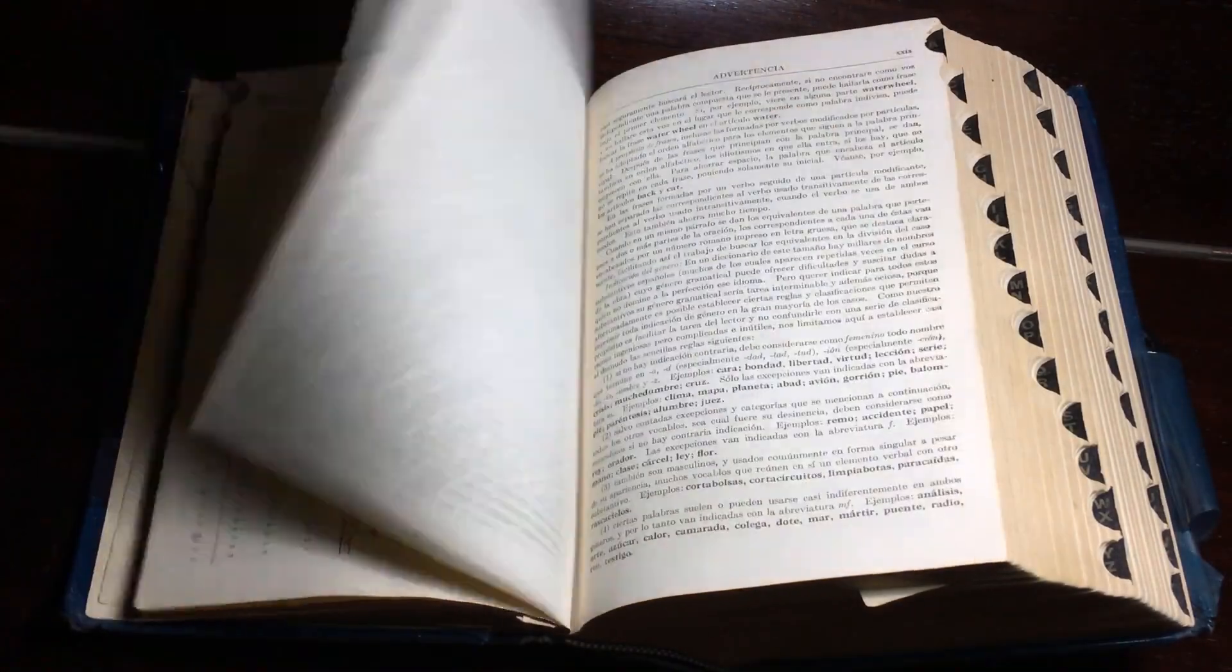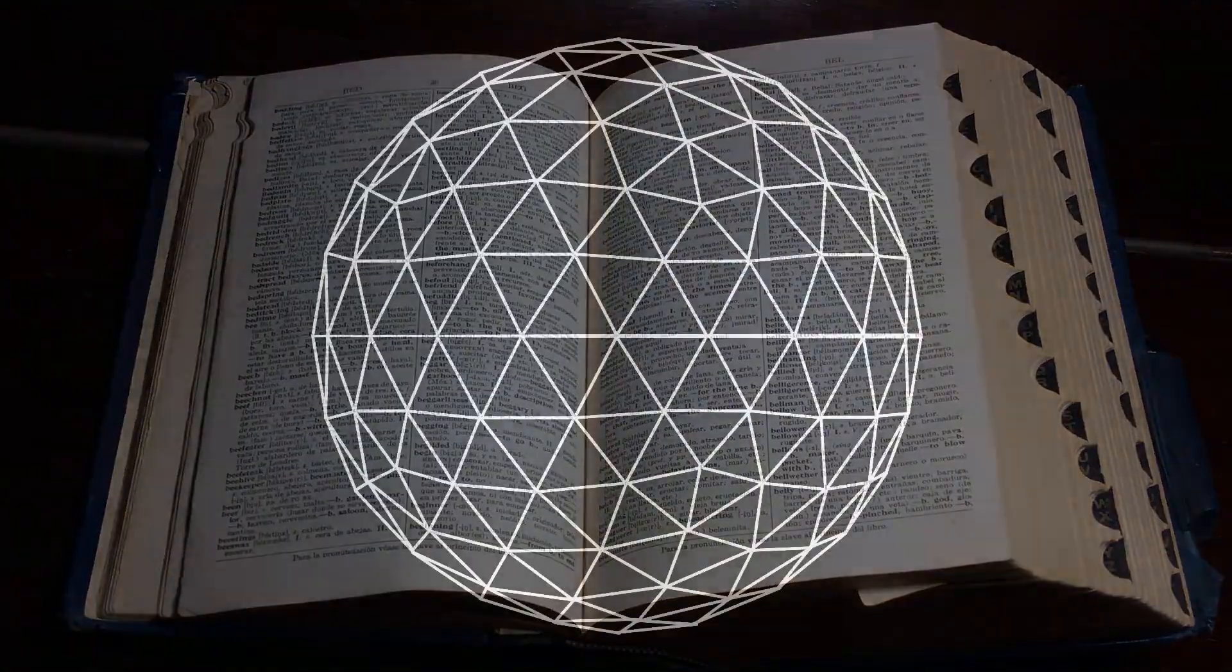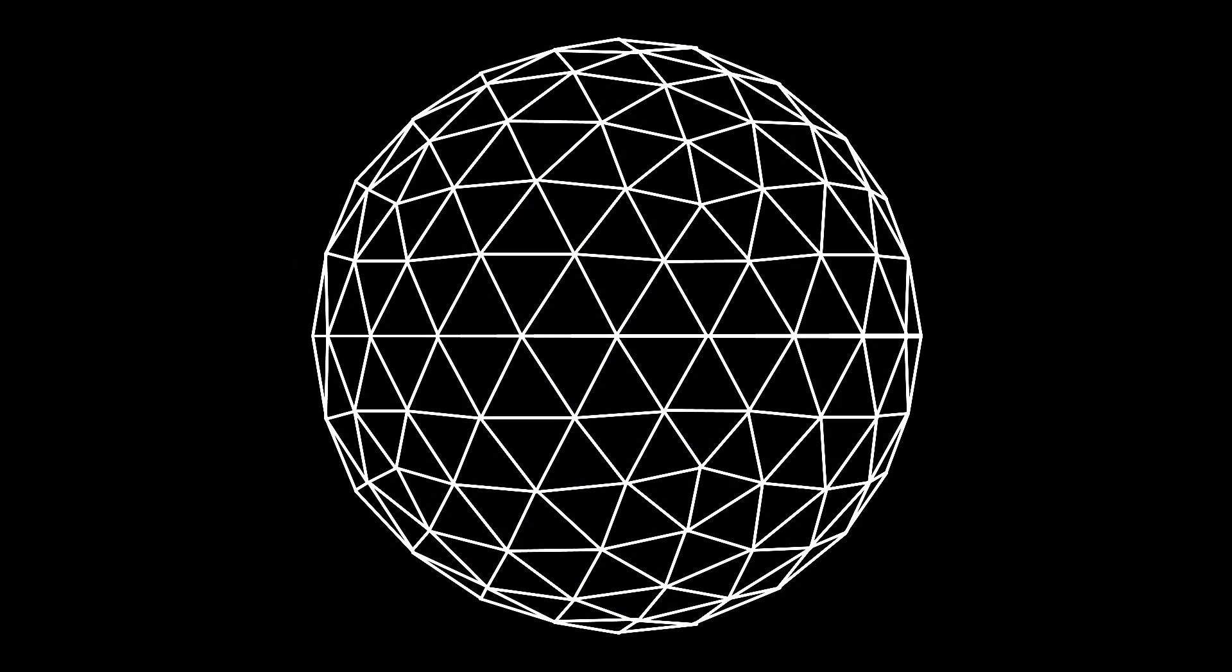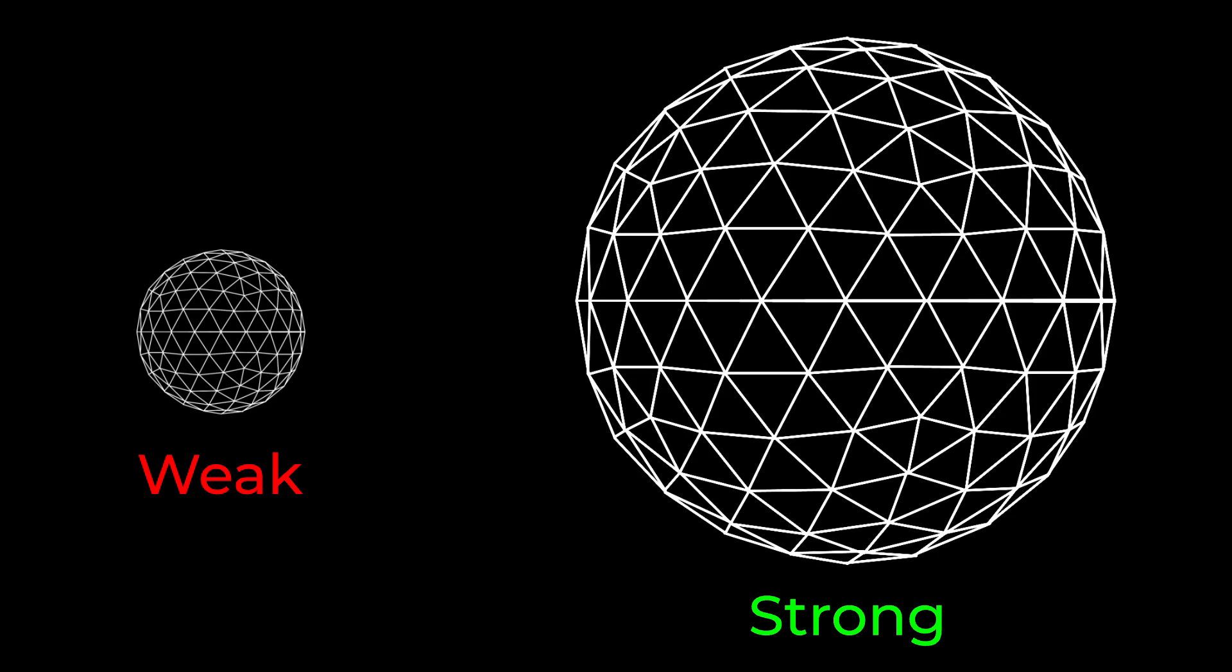First of all, let's define this fancy word, geodesic. A geodesic sphere is a sphere made of triangles. An interesting property of these spheres is that they become stronger as they become bigger, due to how they distribute stress over their surfaces.